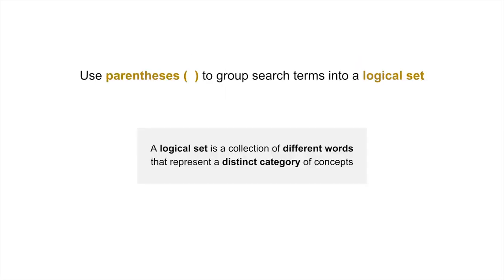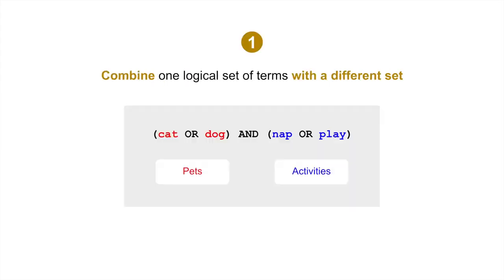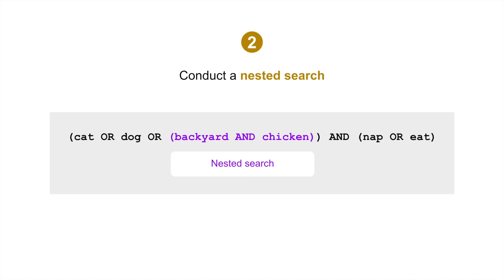Use parentheses to group search terms into a logical set — a collection of different words that represent a distinct category of concepts. There are two primary uses of parentheses. First, combine one logical set of terms with a different set of terms, using parentheses to enclose and keep the sets separate. For example, this search combines a logical set of pets (cats or dogs) with a set of activities (nap or play). The second use of parentheses is to conduct a nested search, a search within a search. For instance, here's a nested search for a third animal — backyard and chicken — within the search for pets.